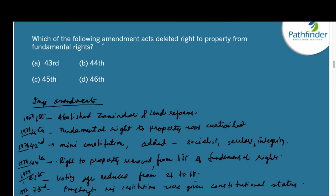Next question: Which amendment act deleted the right to property from fundamental rights? The correct answer is the 44th Amendment. There were two amendments that affected this right: the 25th Amendment curtailed and restricted the right to property, and then in 1978 the 44th Amendment deleted the right to property as a fundamental right. So right to property no longer exists as a fundamental right with the implementation of the 44th Amendment to the Constitution.